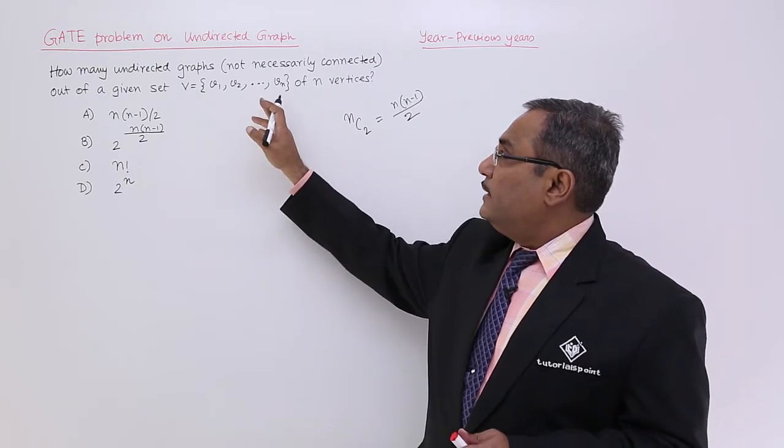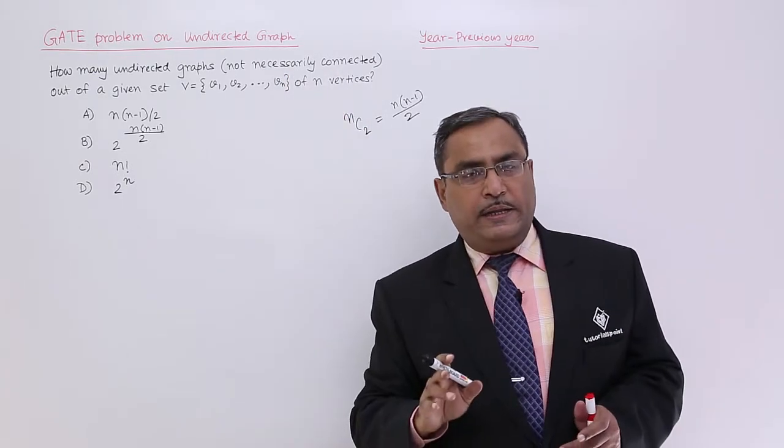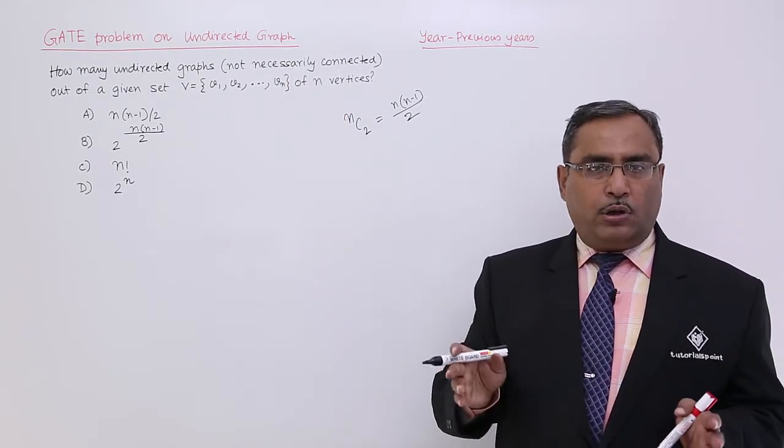It is telling that not necessarily connected. That means a graph can have multiple components in that case.